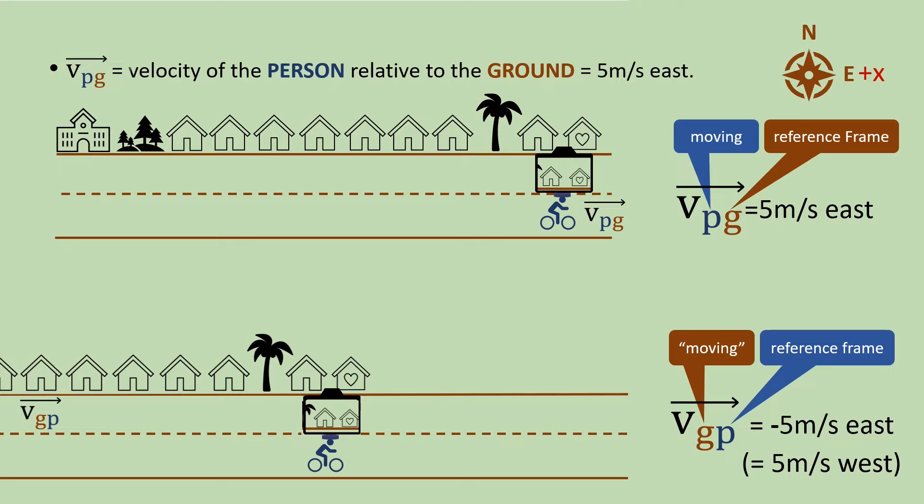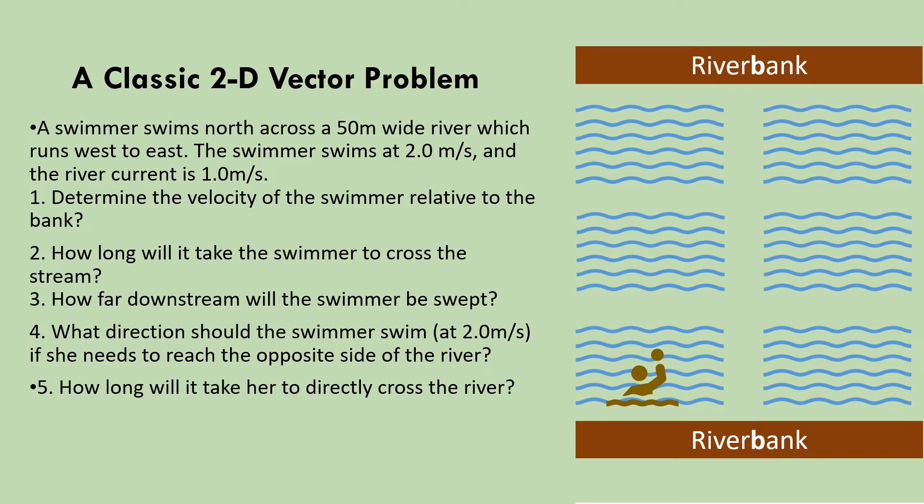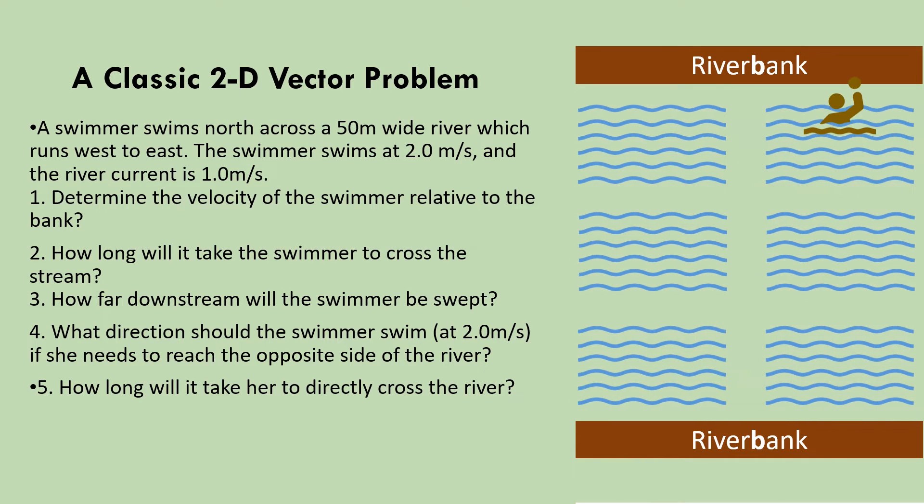Now that we've covered the key terms and ideas, let's apply them to a classic high school physics problem. Here we have a student swimming north at 2 metres per second across a river which is flowing east at 1 metre per second. Let's first look at the relative velocities in different reference frames.